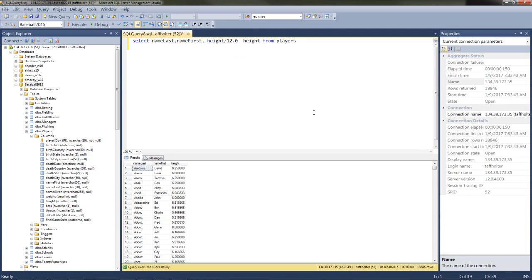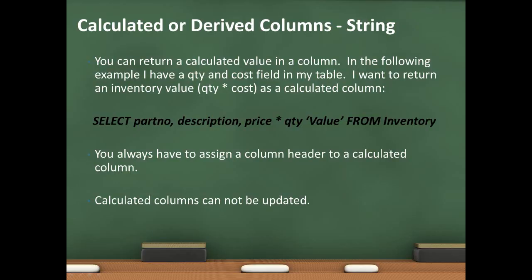Let's continue. Everything that I'm doing right now, you can do too — you can select the Baseball 2015 database and type in the same queries. The only thing you can't do is change my data. Also, I should mention that later, when Visual Studio generates insert, update, and delete statements from your SELECT, it can update regular columns but can never update a calculated or derived column — it wouldn't know how to do that. So calculated columns are ignored for updates.